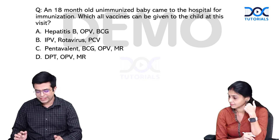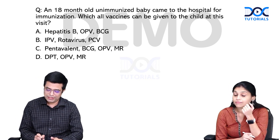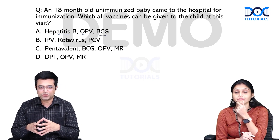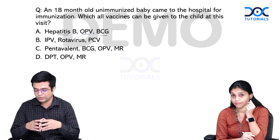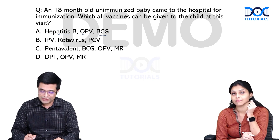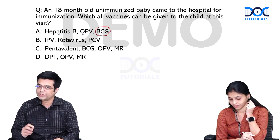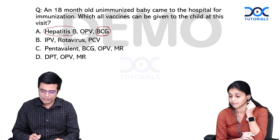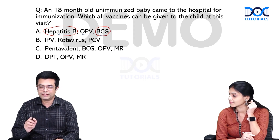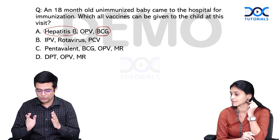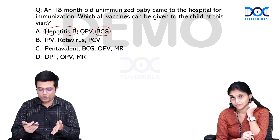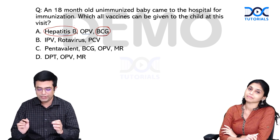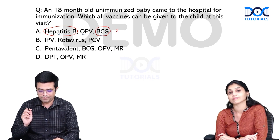We have four options. Option A says hepatitis B, OPV, and BCG can be given. If you have read your textbooks or attended the videos, you would know that BCG cannot be given beyond one year of age according to the national immunization schedule. Also, individual hepatitis B dose is only given as a birth dose in the neonatal period. Since the child is 18 months old, option A contains both hepatitis B and BCG — making it invalid.